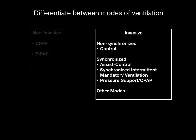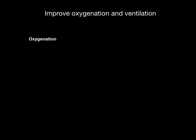Now let's move on to the next learning objective, which is how to control a ventilator to improve oxygenation and ventilation. There are things you can adjust on the ventilator to improve oxygenation, and there are things you can adjust to improve ventilation. In Mechanical Ventilation 101, we place a brick wall between the two — those things you adjust to improve oxygenation are different than the variables you adjust to improve ventilation.